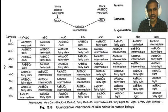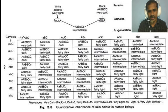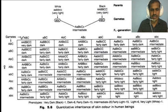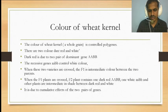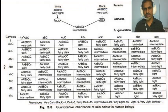In summary, when three colors are crossed, the F2 generation gives the ratio 1:6:15:20:15:6:1 — covering very dark, dark, intermediate, mulatto, fair, light, and very light phenotypes. Thank you for watching this video.